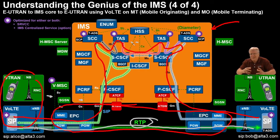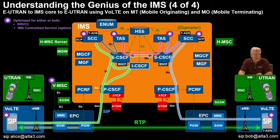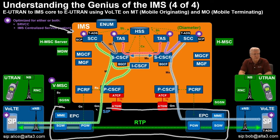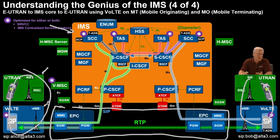What we need to do is get our arms around all of these different components. Right now you should see three blocks: the IMS core, that's the orange part; the evolved packet core, that's where the overpriced routers are; and then the radio access network, the RAN, which could be the 3G, which is the green one, or the 4G version, which is that navy blue color.